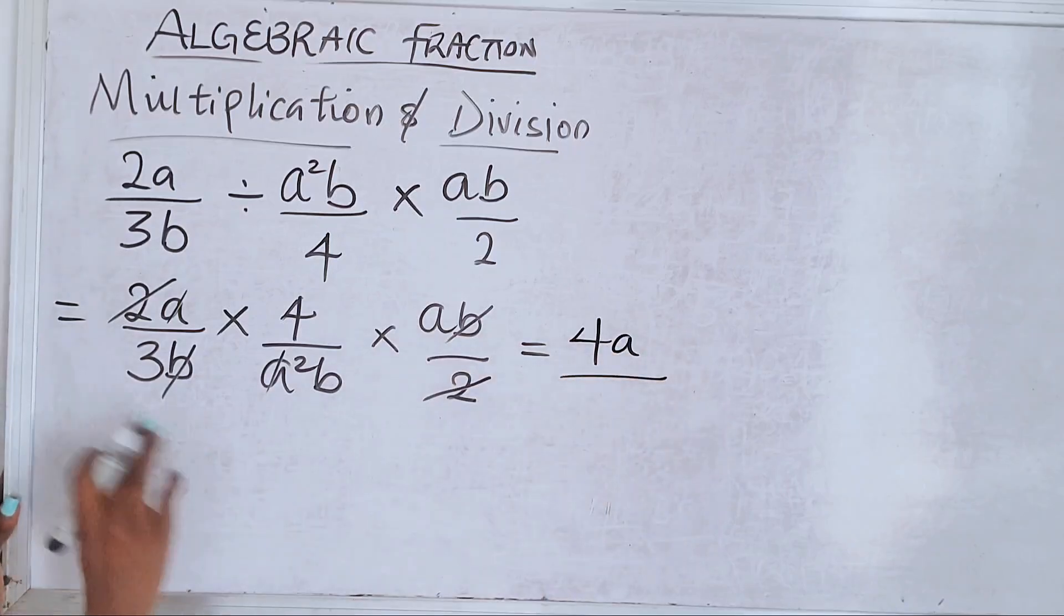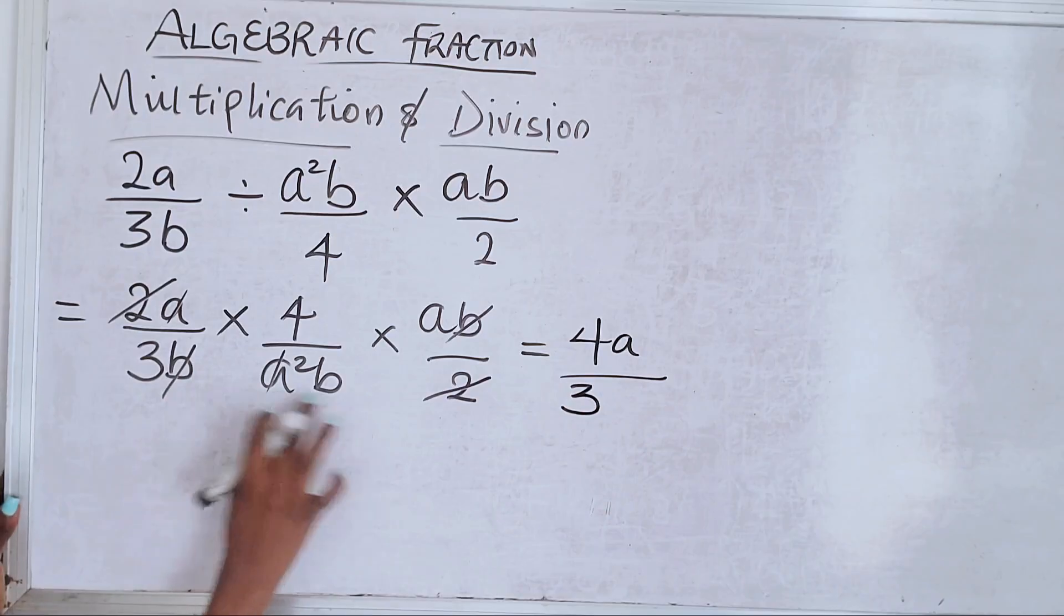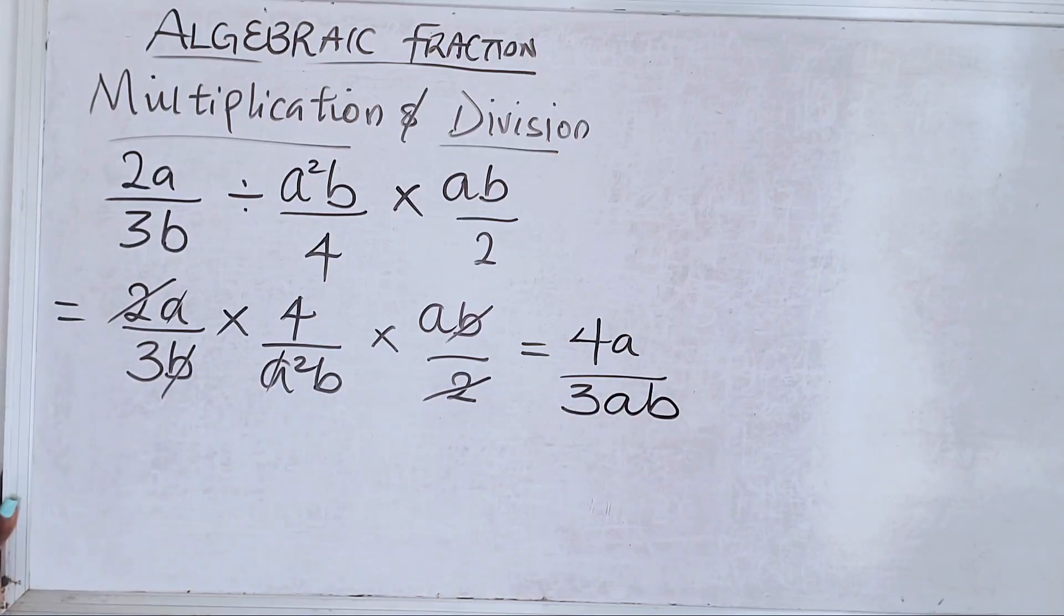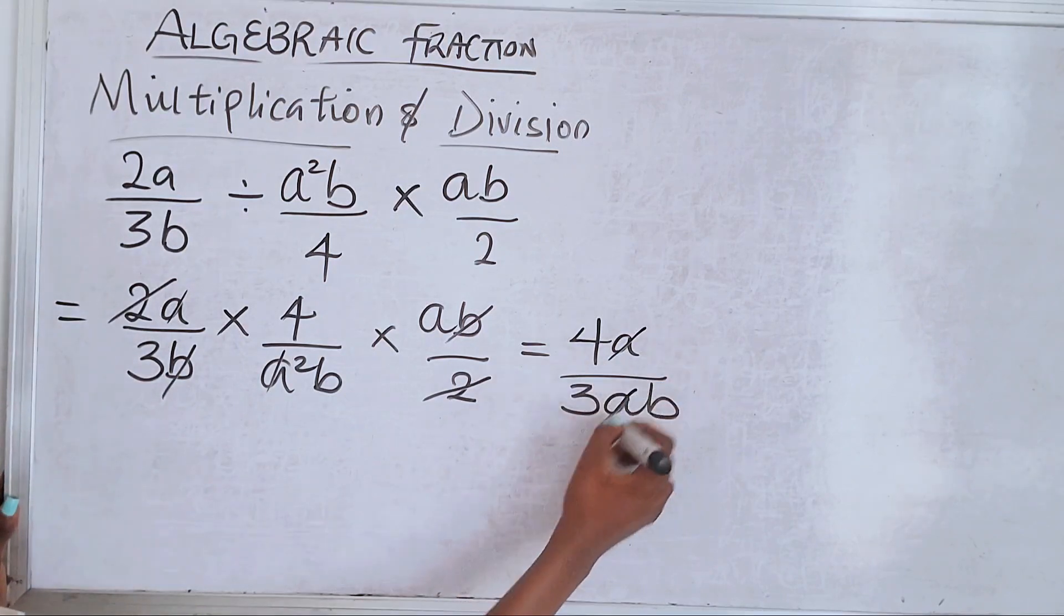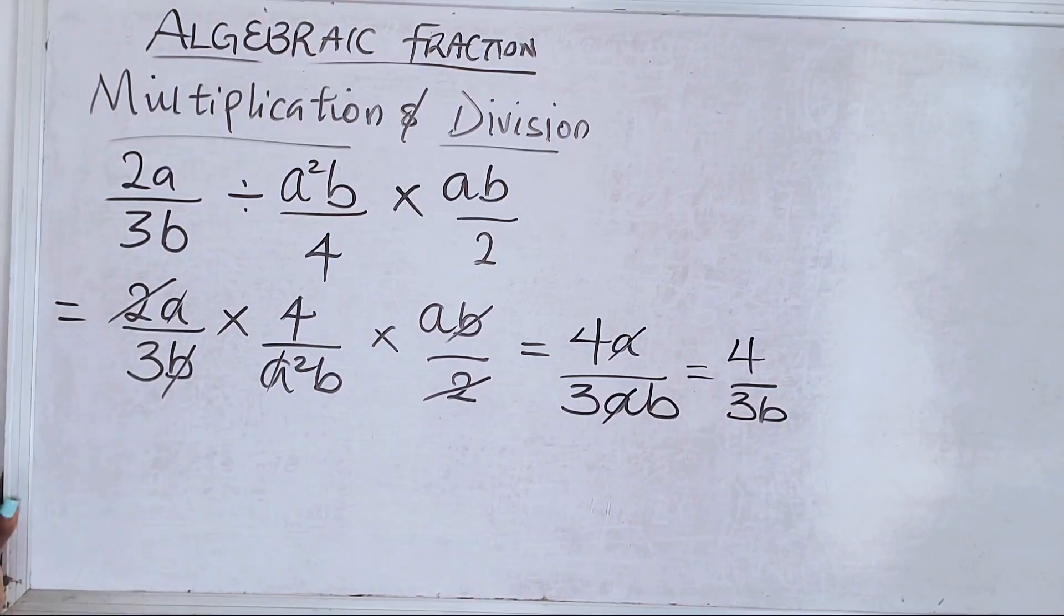We're left with 4 and we're left with 'a' all over 3, one 'a' here, and b. You see we didn't cancel one 'a' which is this one, so you're left with 4a over 3b. Do you see that?